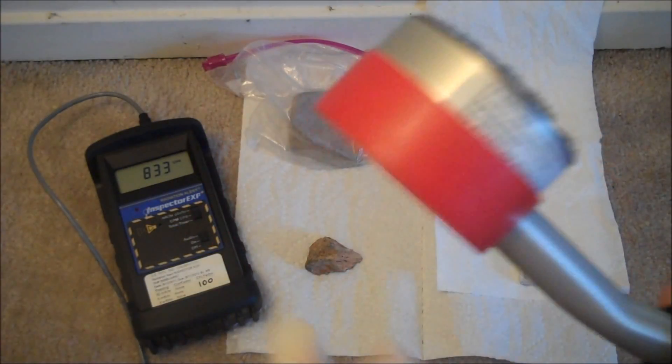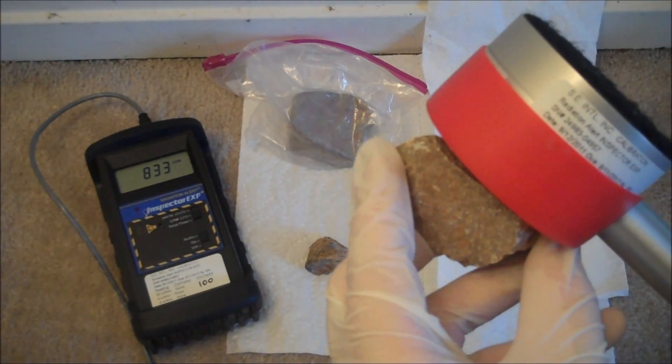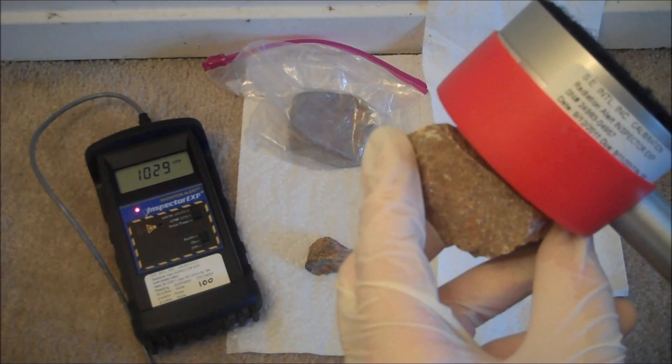This can be simply blocked with the plastic cover of your Geiger counter. Now we're only picking up beta and gamma. There is a difference.